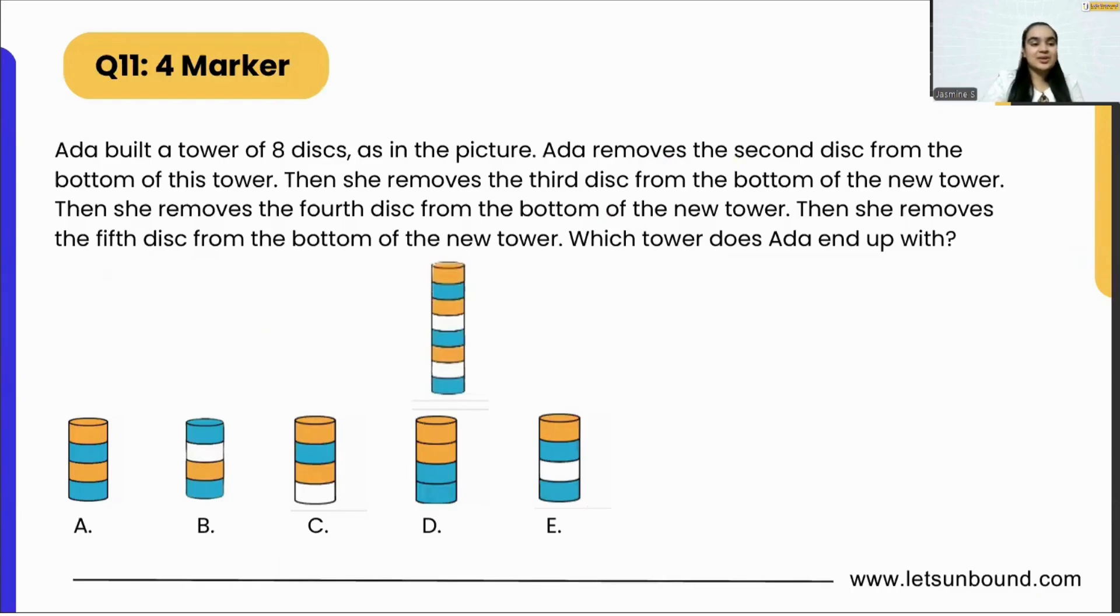Today's question is: Ada built a tower of eight discs as in the picture. Ada removes the second disc from the bottom of the tower. Then she removes the third disc from the bottom of the new tower. Then she removes the fourth disc from the bottom of the new tower, and then she removes the fifth disc from the bottom of the new tower. Oh my god, so many instructions! Which tower does Ada end up with?